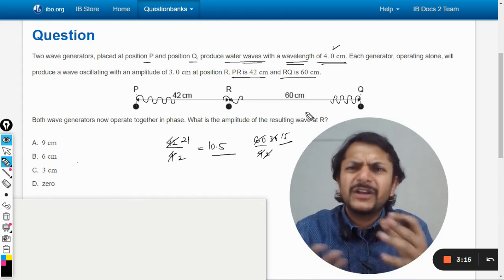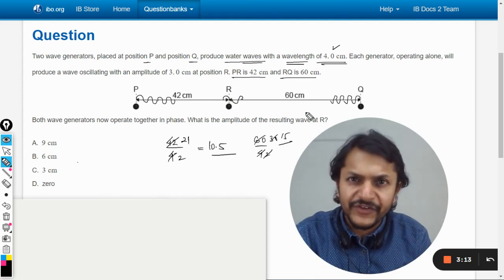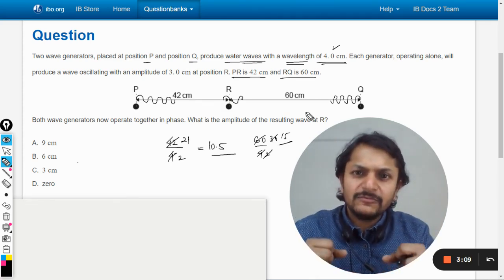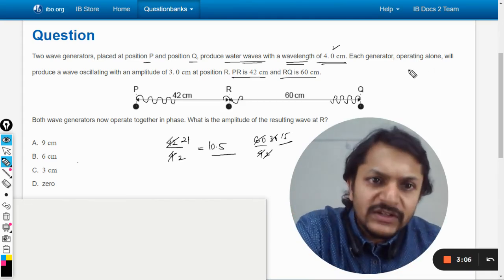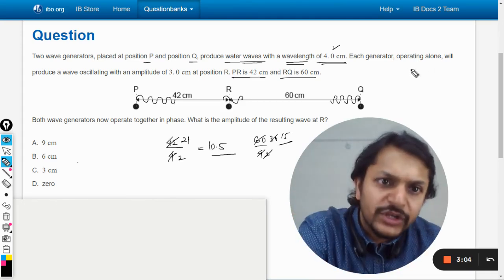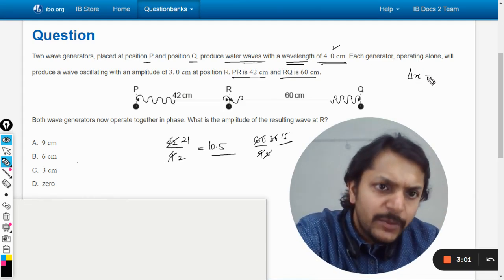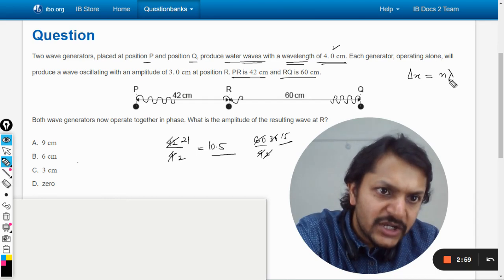How can we explain it mathematically? What is given as a principle in our book is that we first find the path difference. The path difference should be equal to the integral multiple of wavelength lambda.